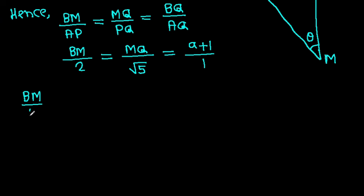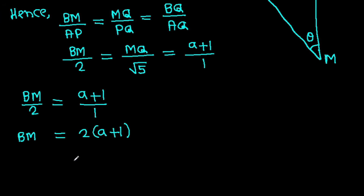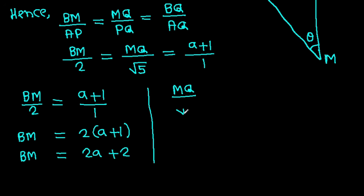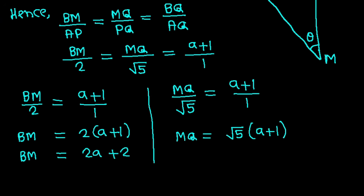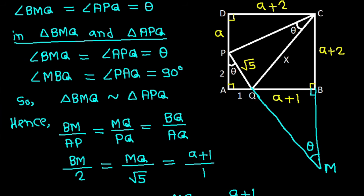We have BM over 2 equals A minus 1 over 1, so BM equals 2 times (A minus 1), that is 2A minus 2. And MQ over root 5 equals A minus 1 over 1, so MQ equals root 5 times (A minus 1).